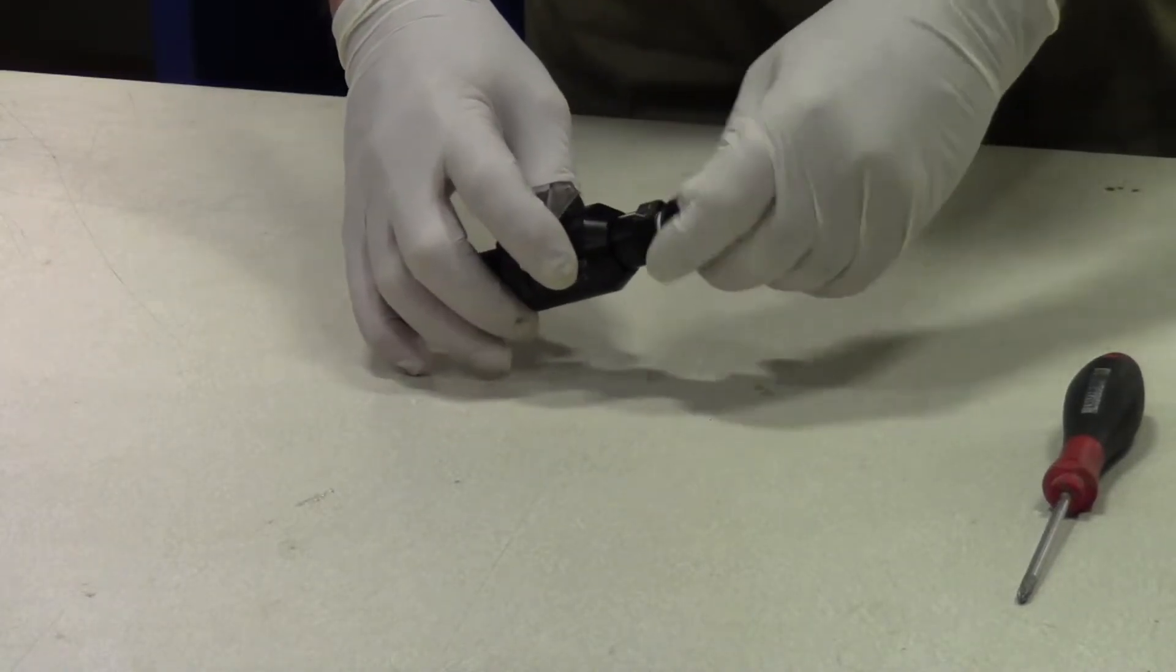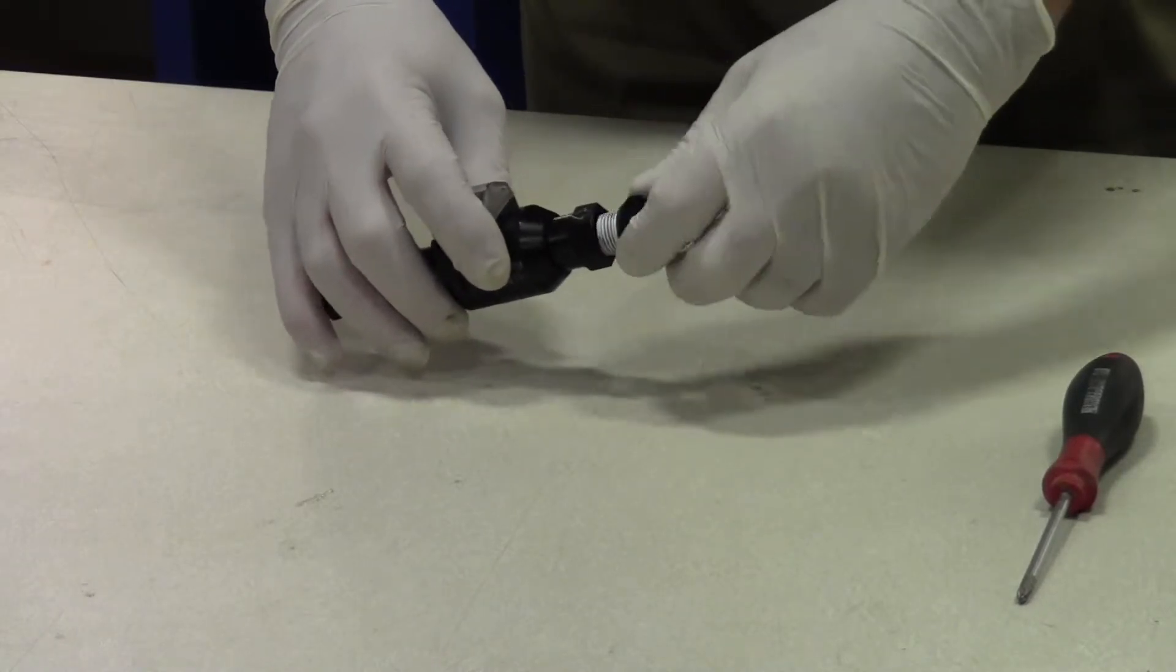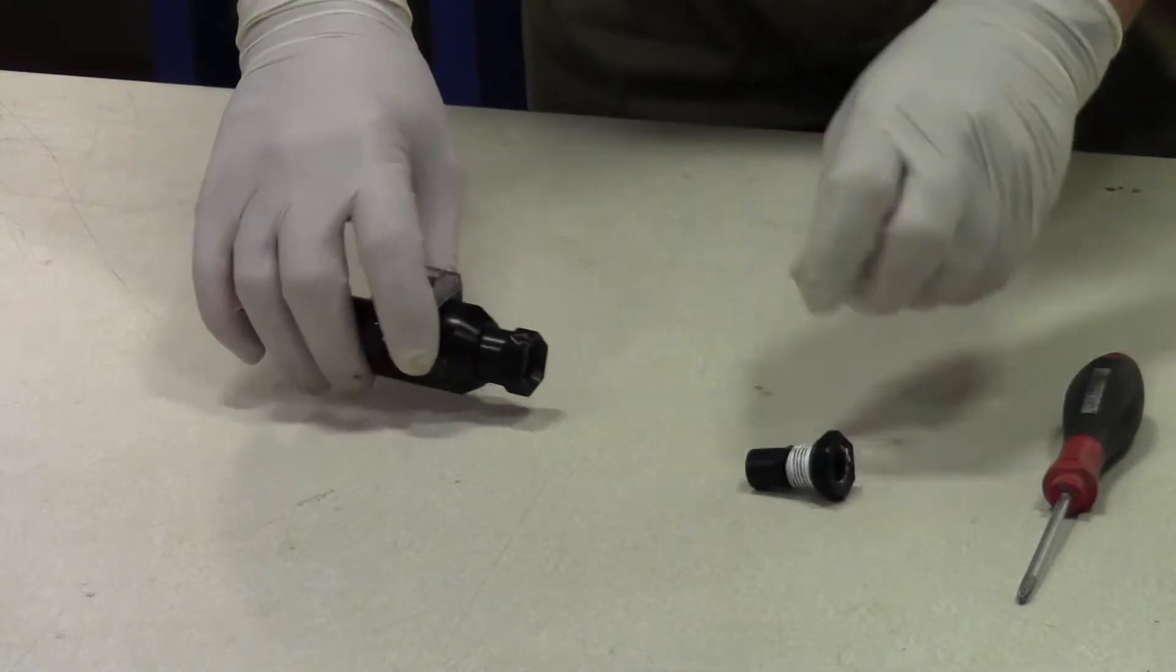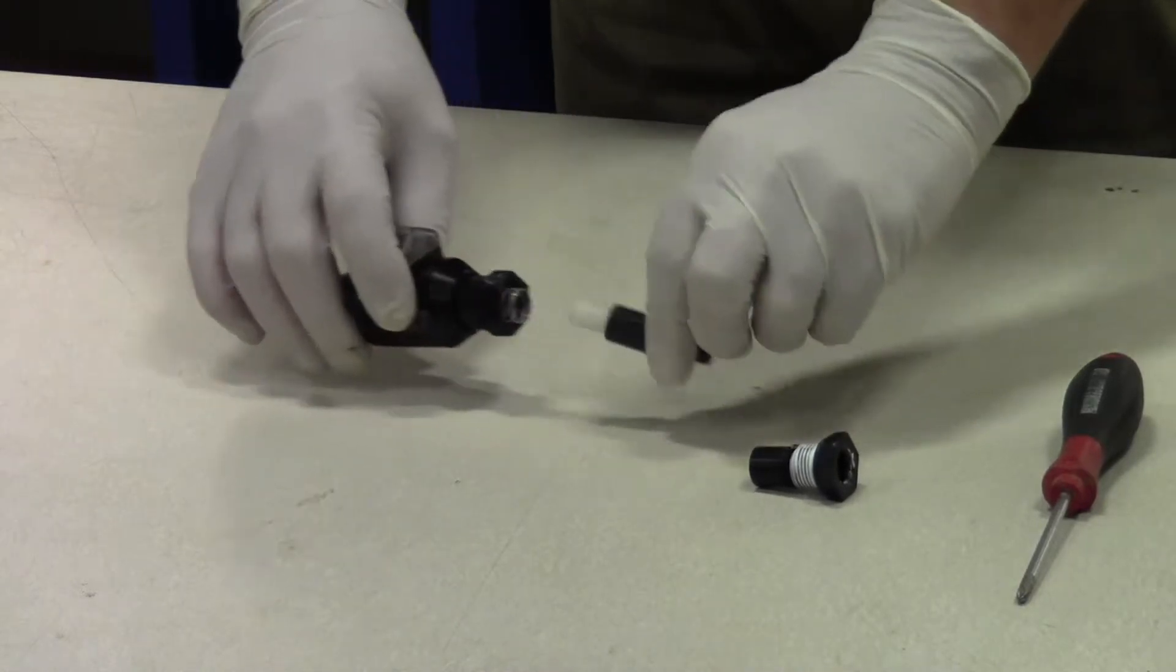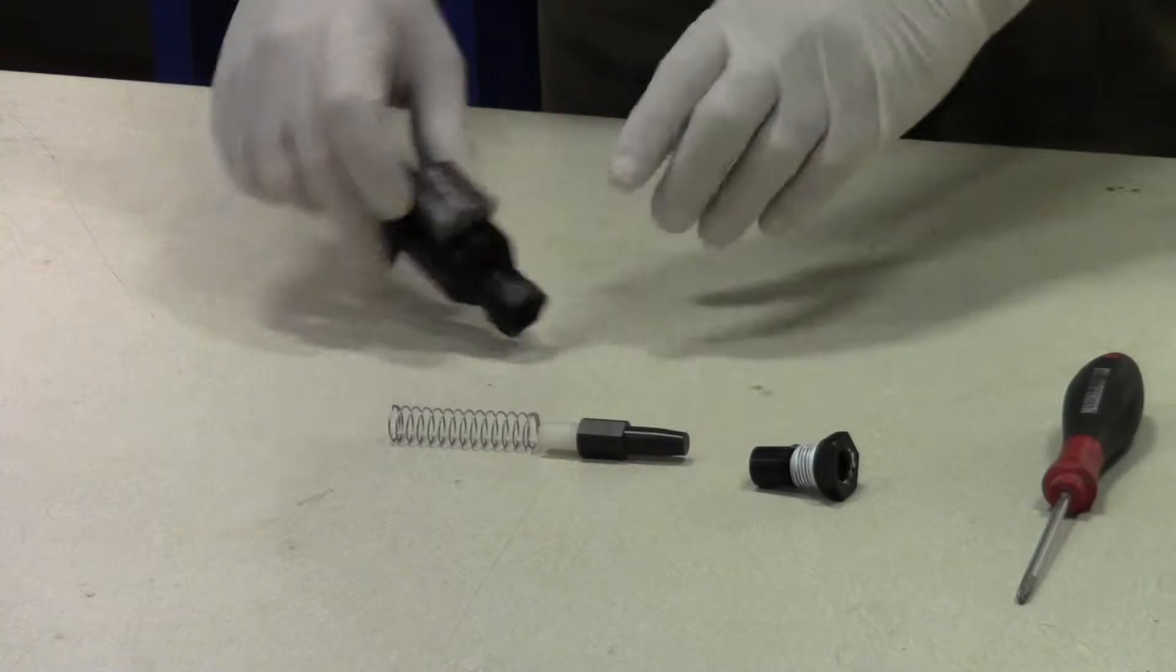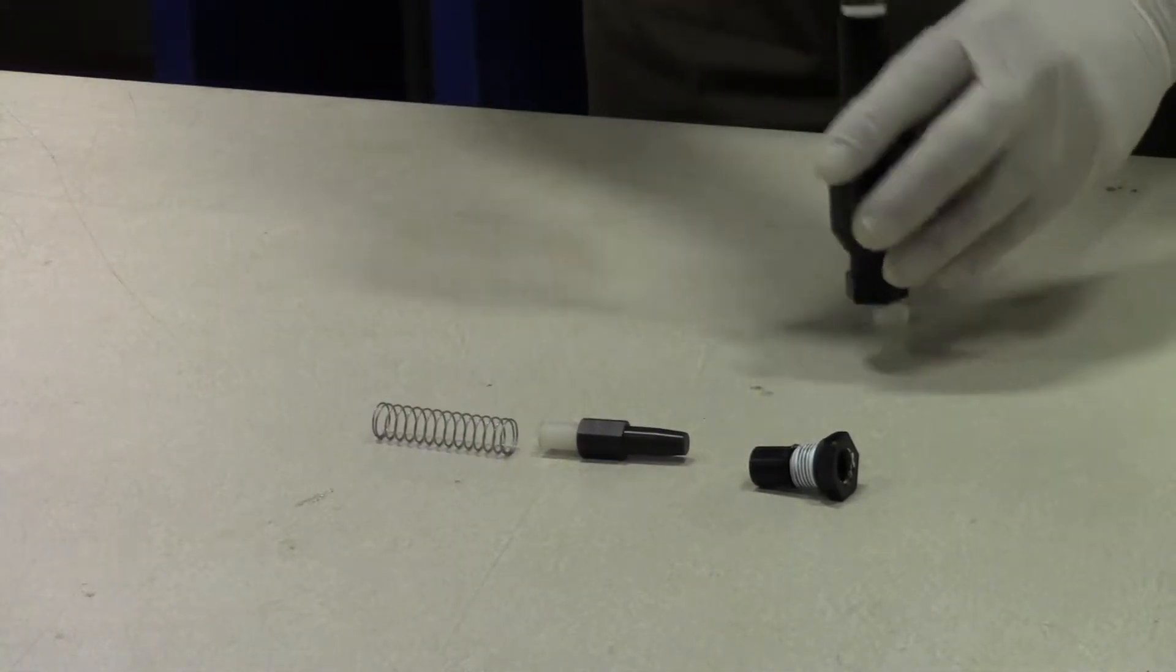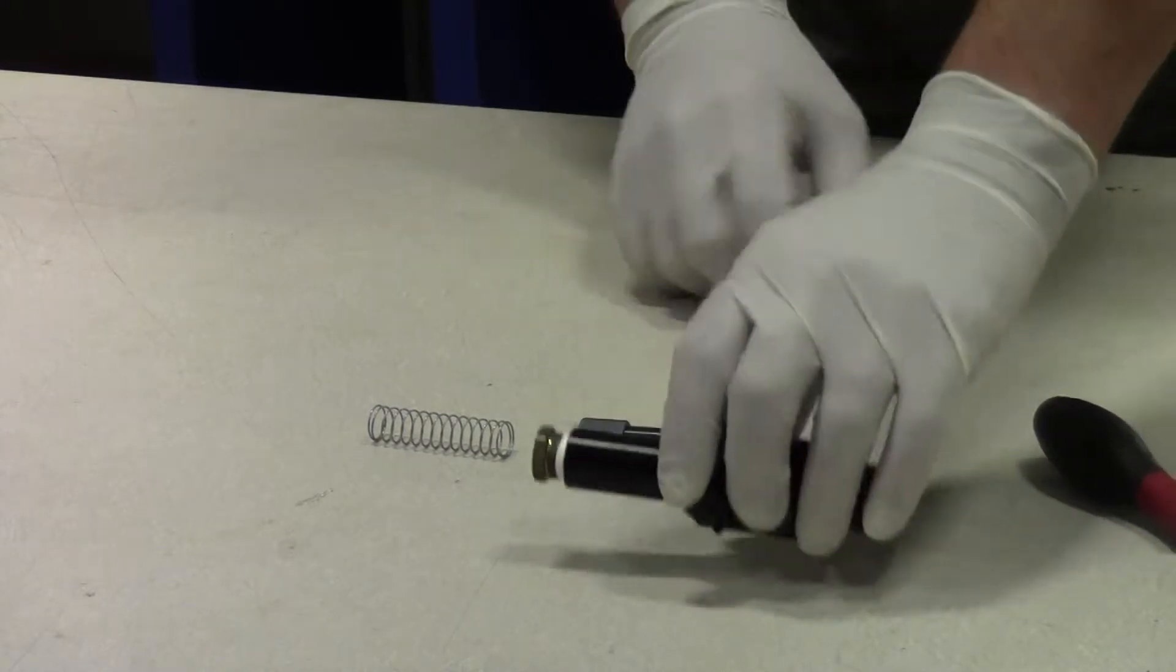Next, remove the air inlet fitting, and once you have it removed, the shuttle, the spring, and the end cap should come out. You may need to tap that end cap to get it out.